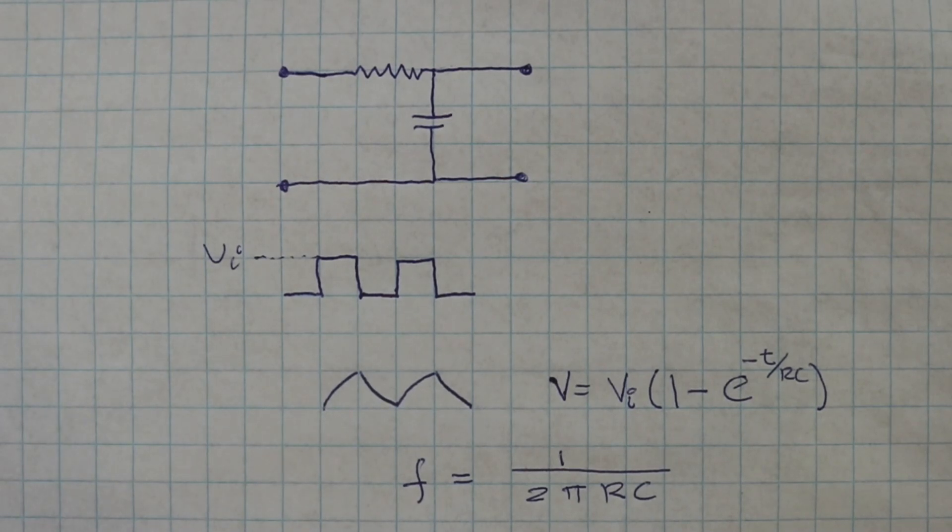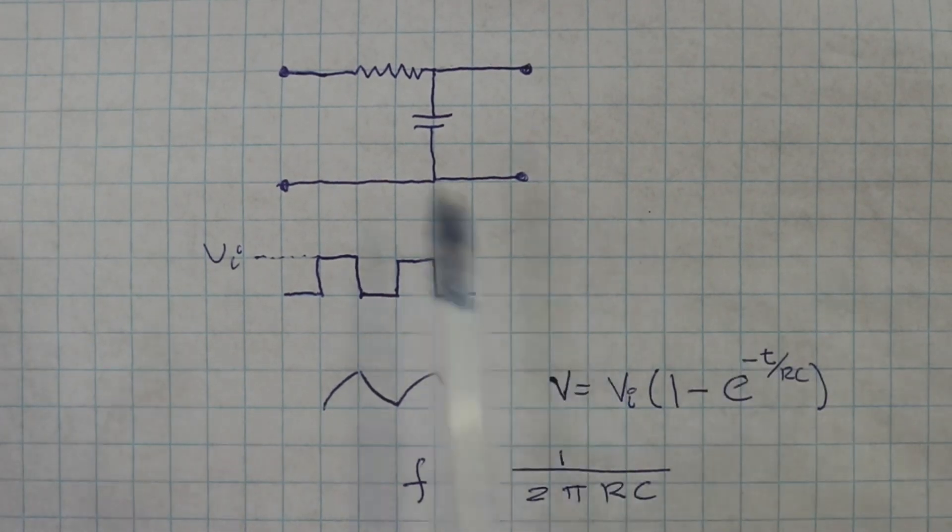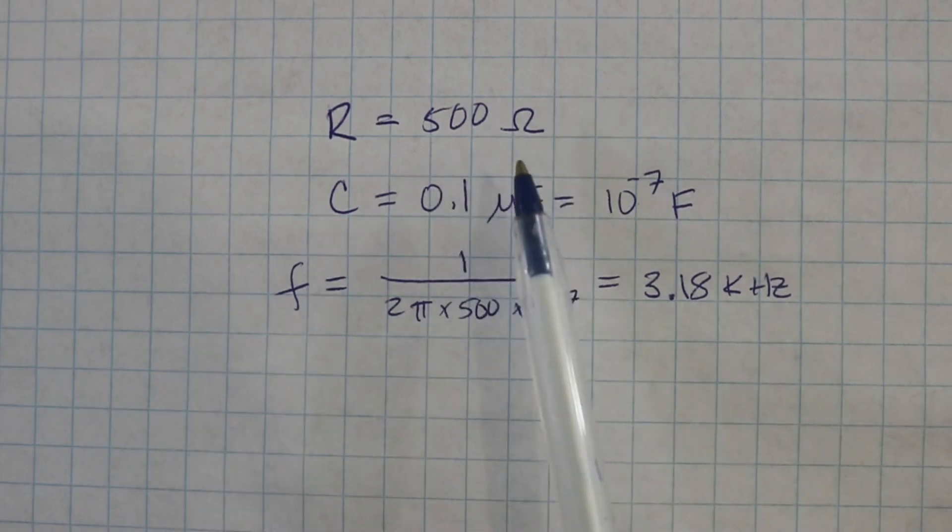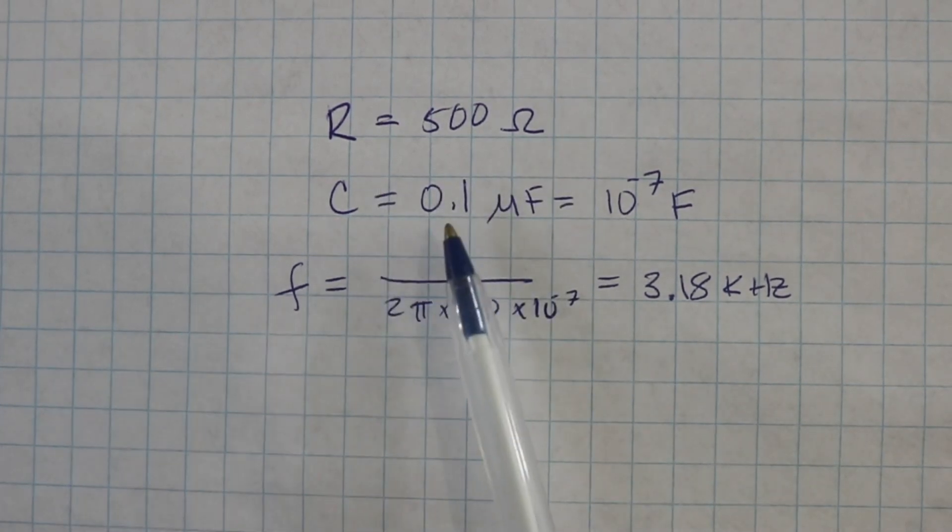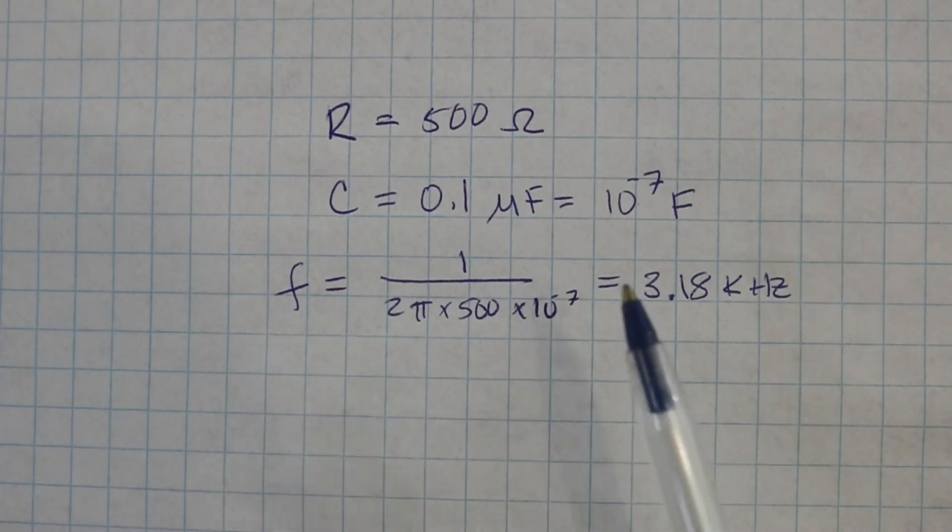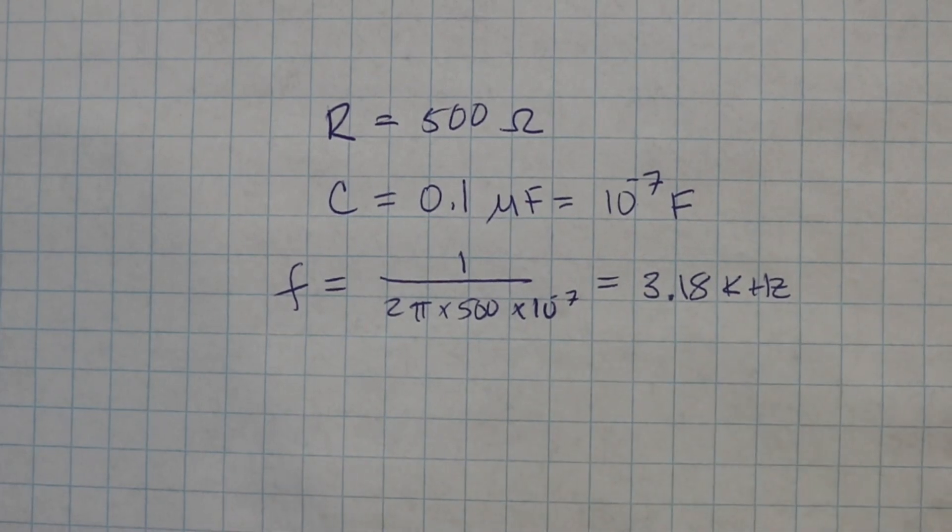Let's now see the circuit in action using three stages of RC filters. I am using 500 ohm resistors and 0.1 microfarad capacitors. Therefore, using the formula, the optimum frequency for the circuit must be 3.18 kilohertz.